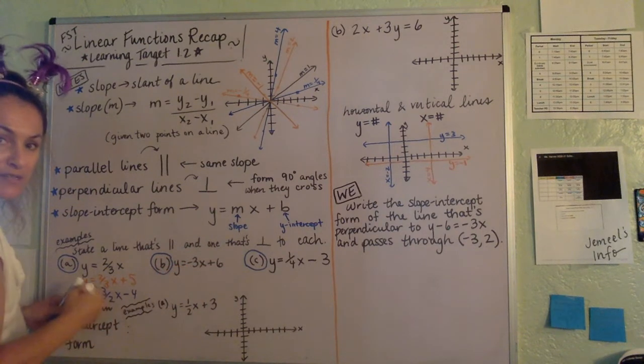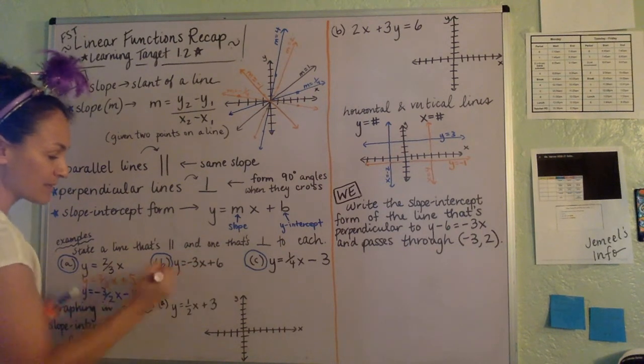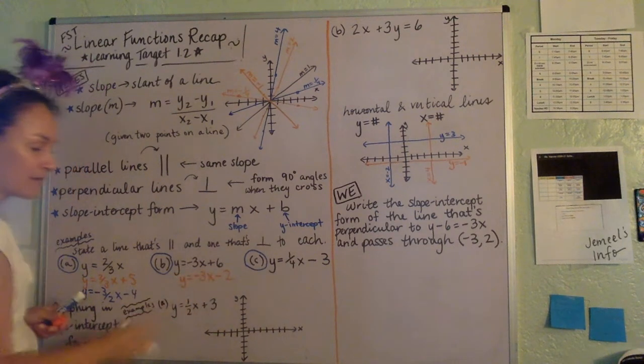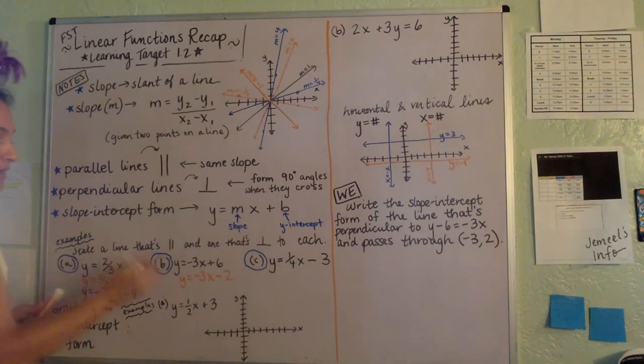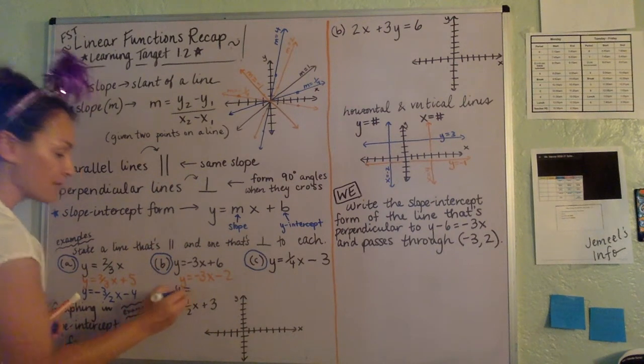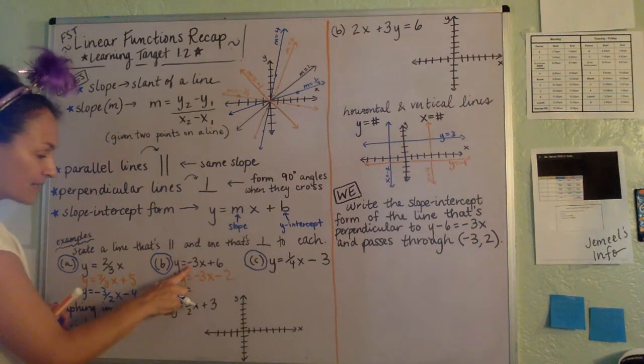A line that's parallel to this one, Y equals negative 3X plus 6, would be like Y equals negative 3X minus 2. Same slope. And a line that's perpendicular to this one would be we want opposite reciprocal slope. So opposite of negative is positive.